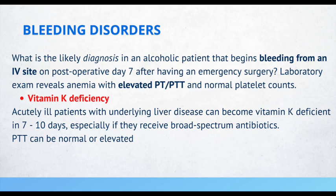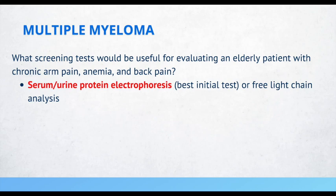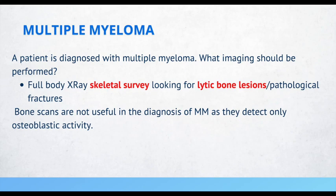What screening tests would be useful for evaluating an elderly patient with chronic arm pain, anemia, and back pain? Serum or urine protein electrophoresis is the best initial test, or free light chain analysis. A patient diagnosed with multiple myeloma should have a full body X-ray or skeletal survey looking for lytic bone lesions or pathological fractures — not a bone scan. A bone scan is helpful for osteoblastic activity, but multiple myeloma has lytic bone activity, so think skeletal survey.